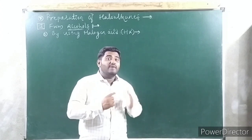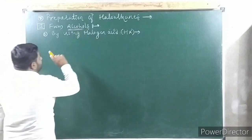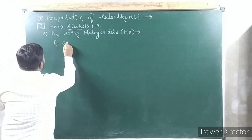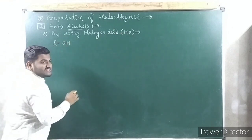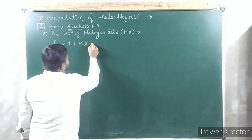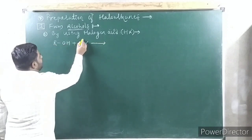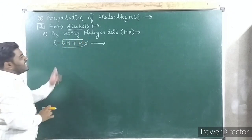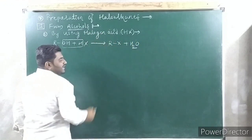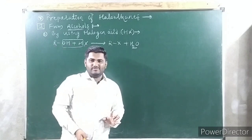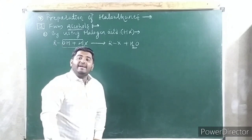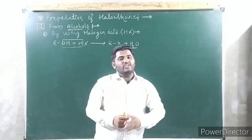We are going to discuss these things up to NEET level. Let us start with from alcohols by using halogen acid. The general formula of alcohol is ROH. The general formula of halogen acid — hydrogen halide — is HX. When you treat alcohol with HX, H₂O is eliminated and you will get haloalkane: RX + H₂O. This haloalkane is commonly called alkyl halide. So when alcohol is treated with halogen acid, you get haloalkane plus water — dehydration takes place.